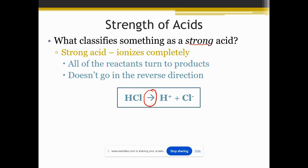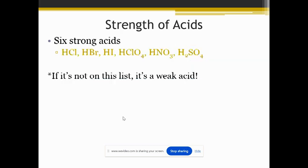So look at the arrow. If we had a weak acid, I'll go into that in a minute. There are only six acids that are considered strong acids. So these are the six that are considered strong. If it's not on that list, then it's a weak acid.